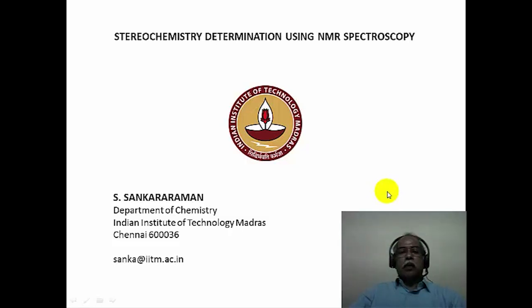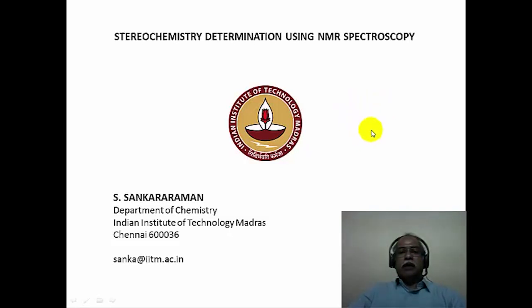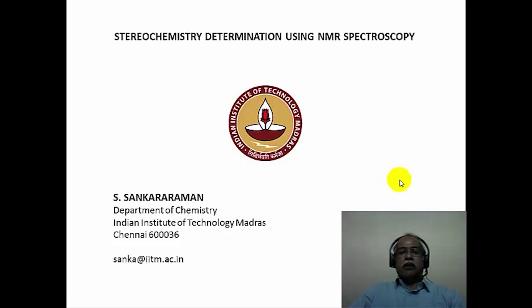Hello, welcome to module 12 of the course on application of spectroscopic methods in molecular structure determination. We are continuing the lecture from module 11 on the use of NMR spectroscopy in stereochemistry determination. In this module, we will consider the nuclear Overhauser effect, how it is used for determining stereochemistry of organic compounds, and also look at some aspects of the lanthanide shift reagent, how they are used for determination of stereochemistry of organic compounds.